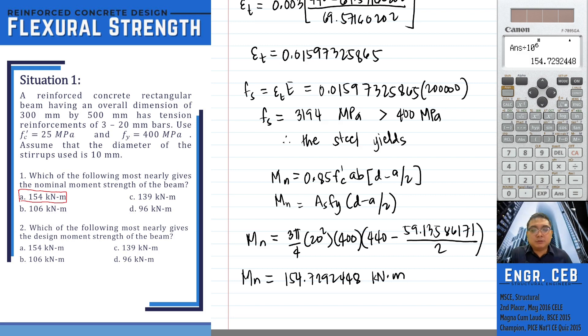Problem 2: which of the following most nearly gives the design moment strength of the beam? So in determining the design moment strength, that is simply the resistance factor phi times MN.